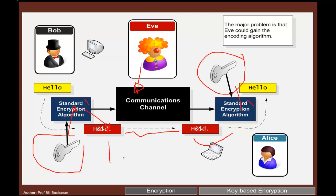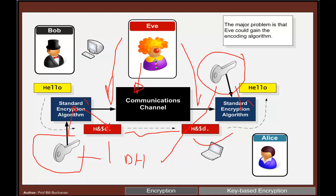We can use techniques such as Diffie-Hellman to generate a shared key, because the problem with private key encryption is that Eve may be listening to the communication channel. With private key and using Diffie-Hellman, Bob and Alice can negotiate the key and it should remain secret.